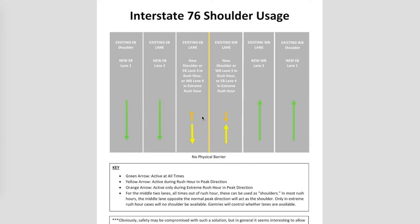Let's say there is excessive eastbound traffic in the morning going toward Center City — they need a third traffic lane. What they could do is make this an eastbound lane 3 during rush hour, as indicated by the yellow arrow for the peak direction. This would become eastbound lane 3, and the inner area would become a two-way shoulder. It's not the safest option, but it'll definitely be much safer than no shoulder at all — so three eastbound lanes, two westbound lanes, and one two-way shoulder.